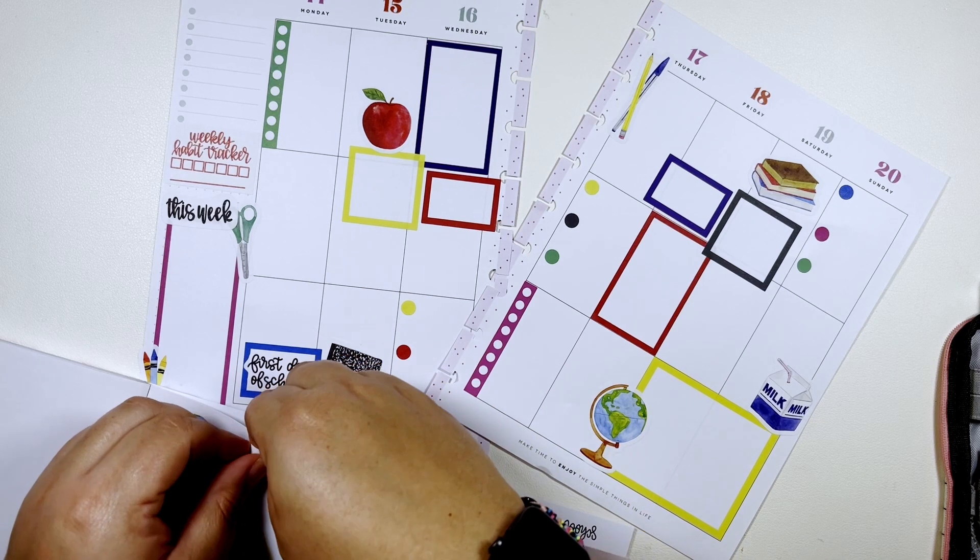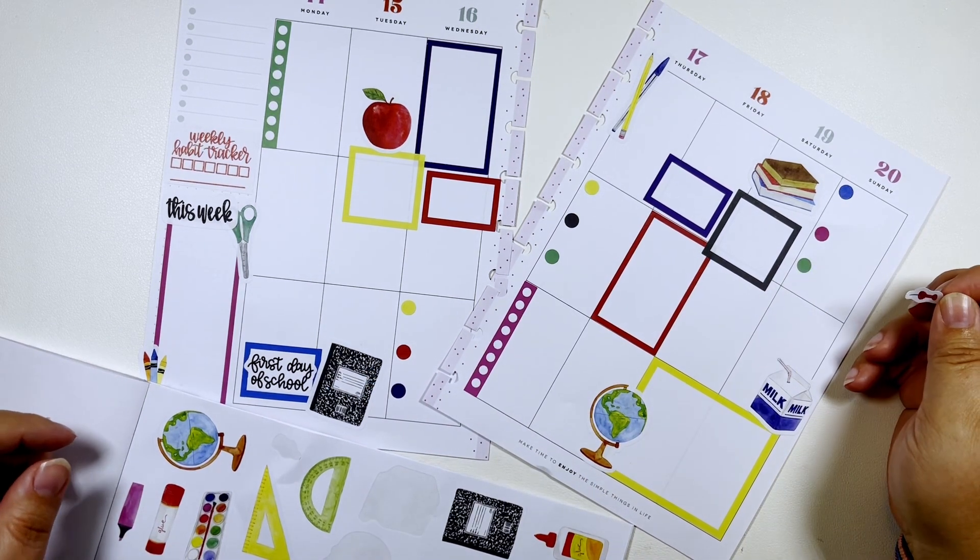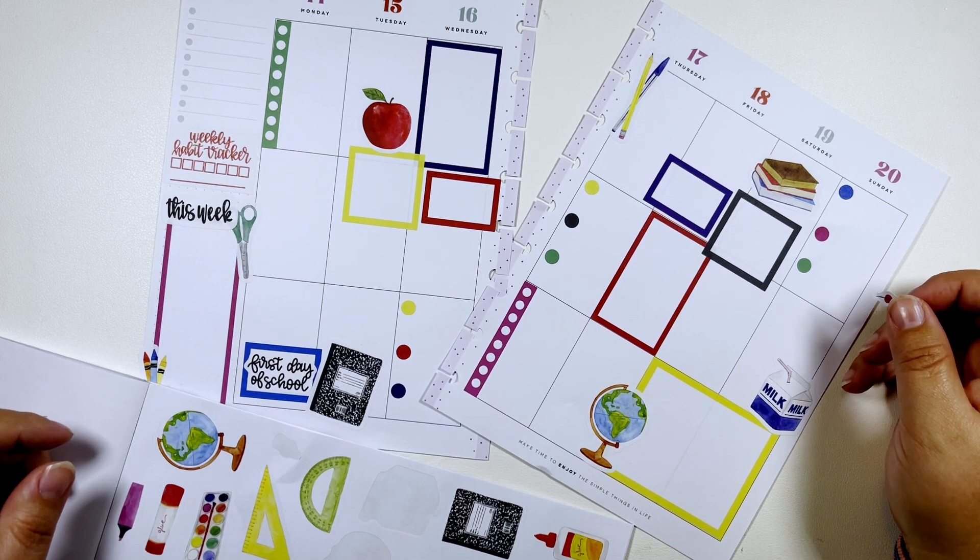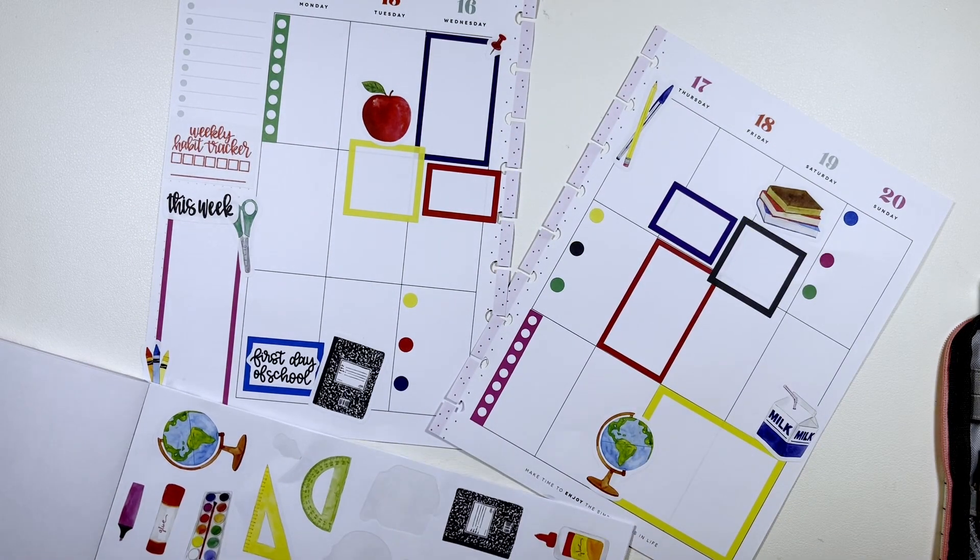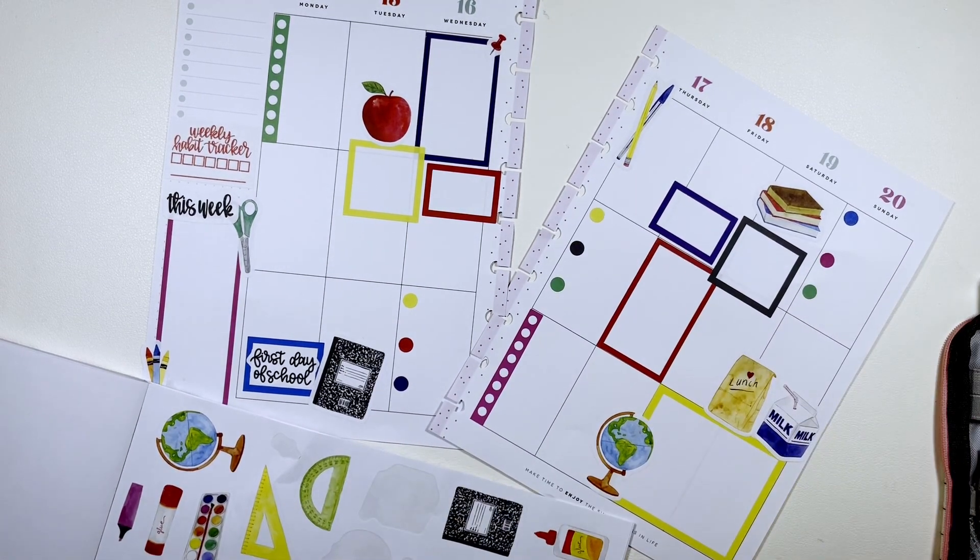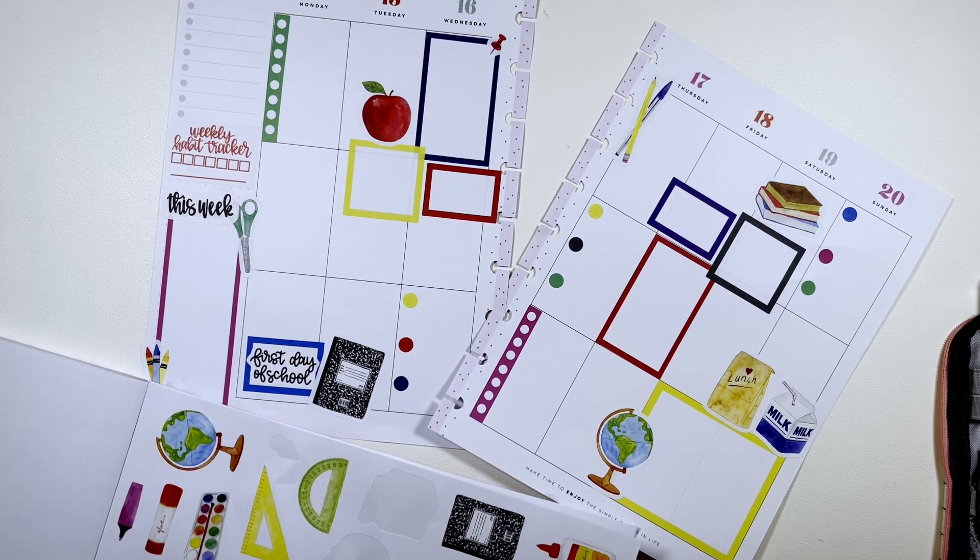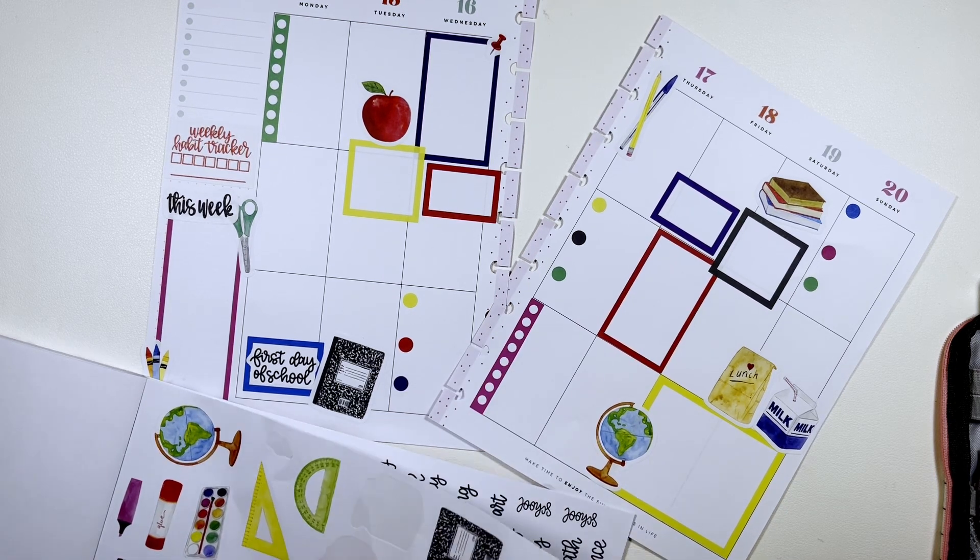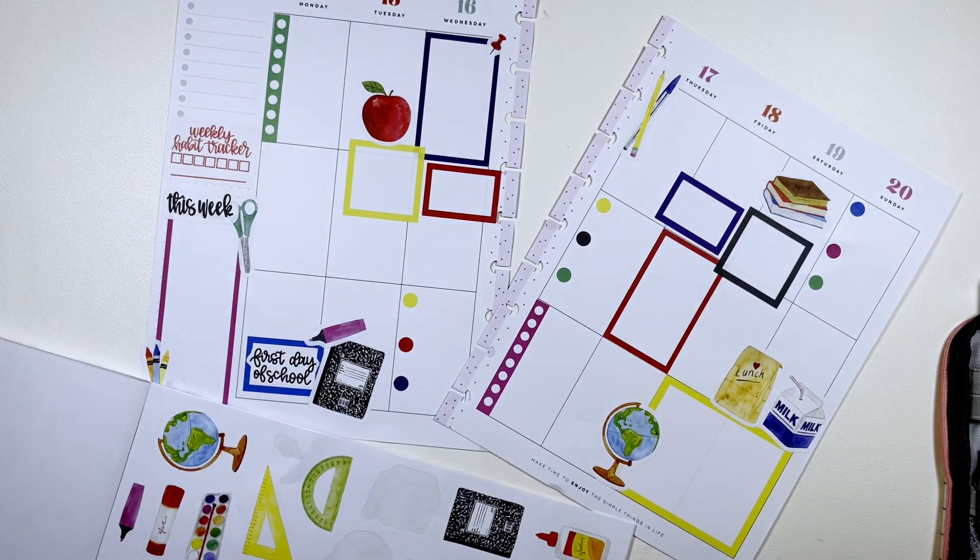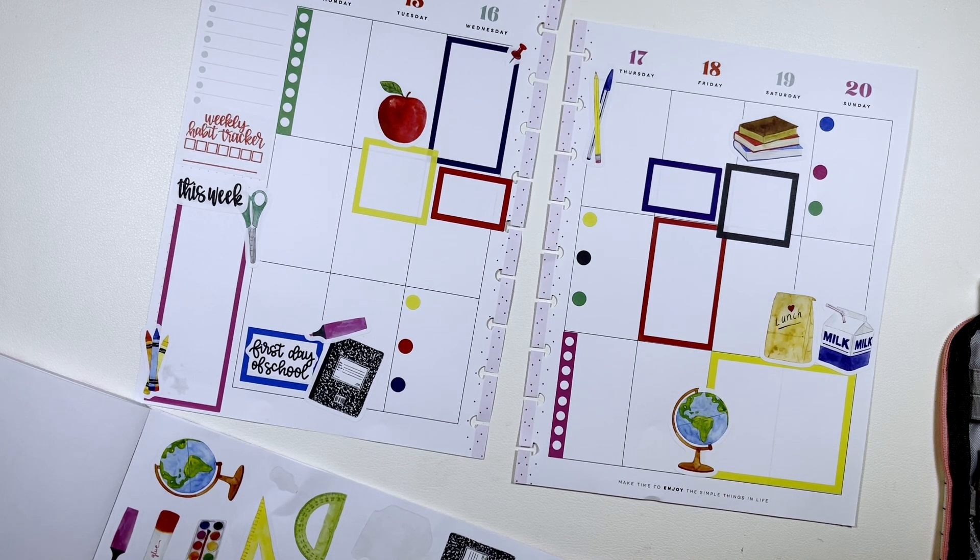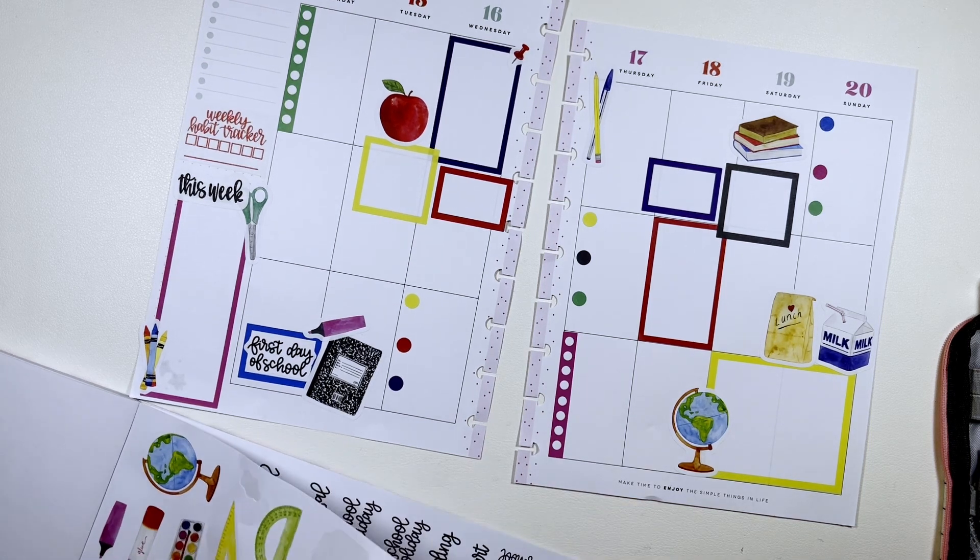This little carton of milk is super cute. Put that there and put those together. You know, lunch, milk box, that would be a huge milk box but that's fine, it's funny. What else do we got? Put that highlighter there and I think that's probably all we're going to do.